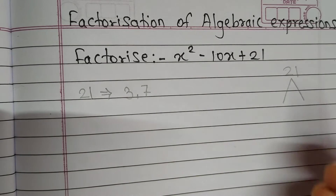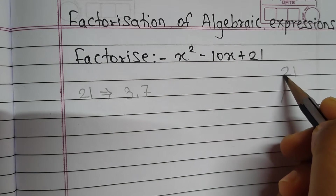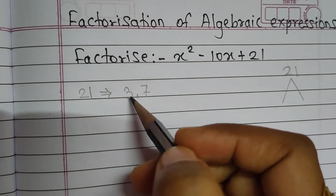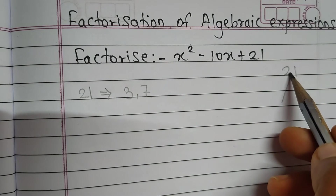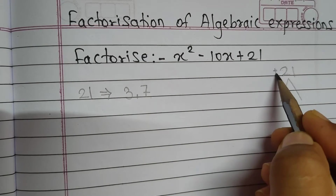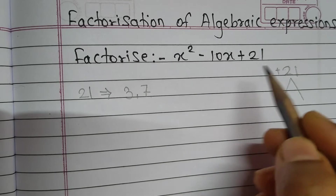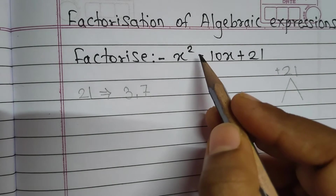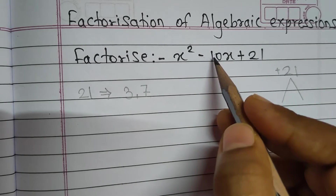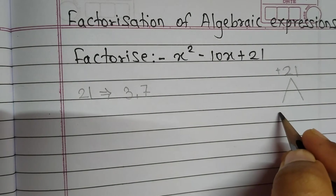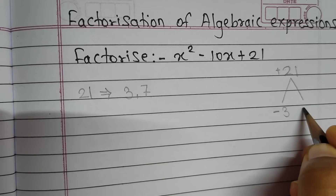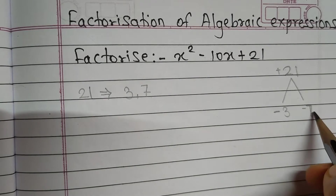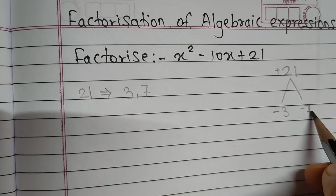The multiplication of the two factors should be 21 — and 21 is positive. The addition or subtraction should be minus 10. We have to take care of the sign. So we choose minus 3 and minus 7 as the two factors.